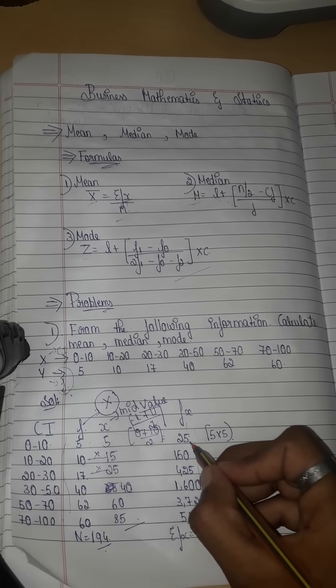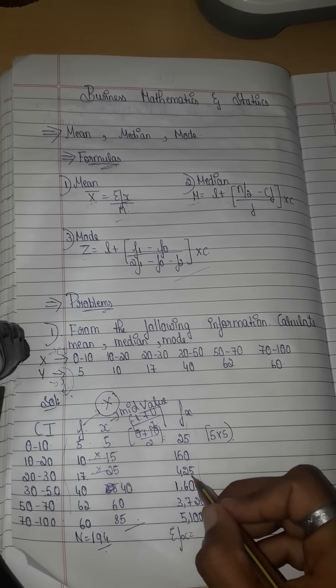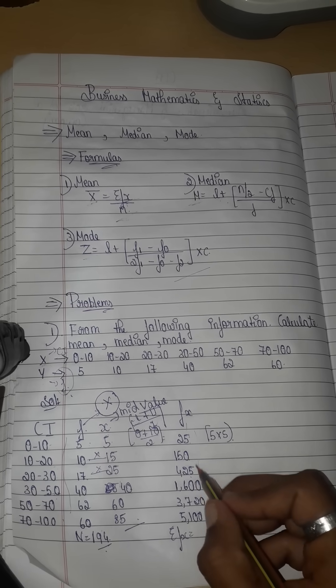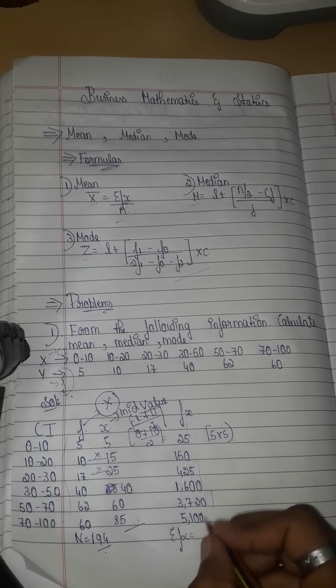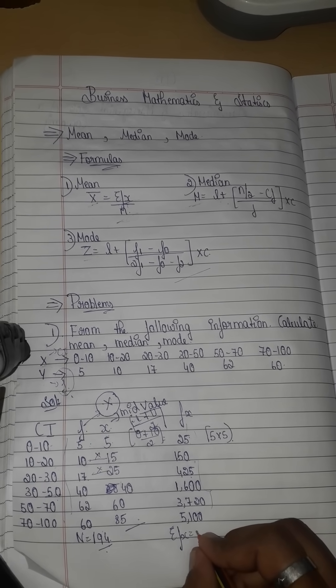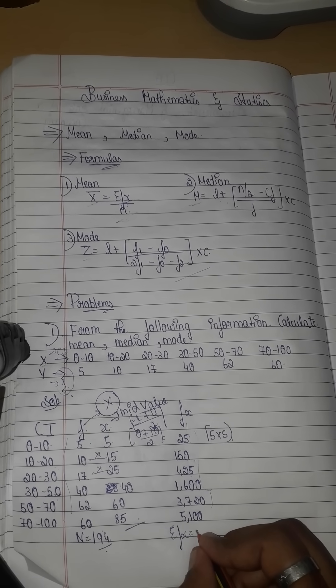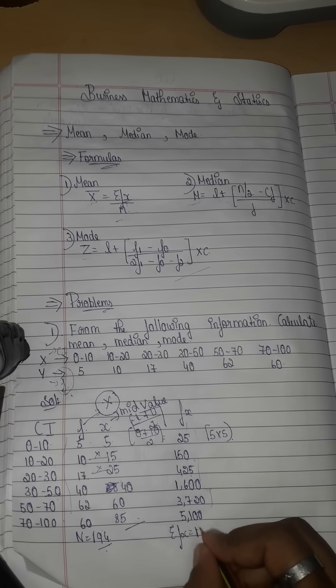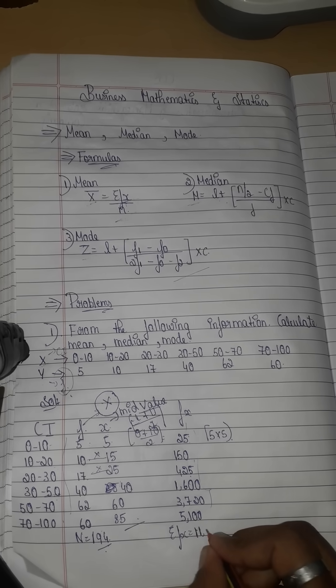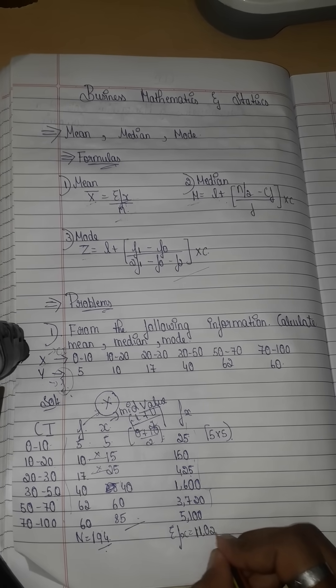Now we add all fx values: 25 plus 150 plus 425, and add all numbers together. The total sigma fx answer is 11,020.